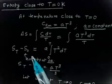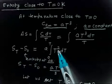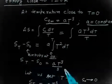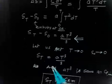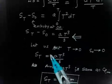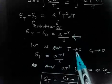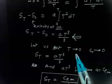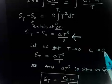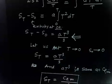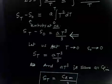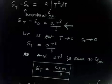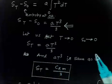Integrating aT² gives aT³/3. By the third law of thermodynamics, as temperature approaches zero kelvin, entropy goes to zero — so S₀ = 0. Therefore St = aT³/3.